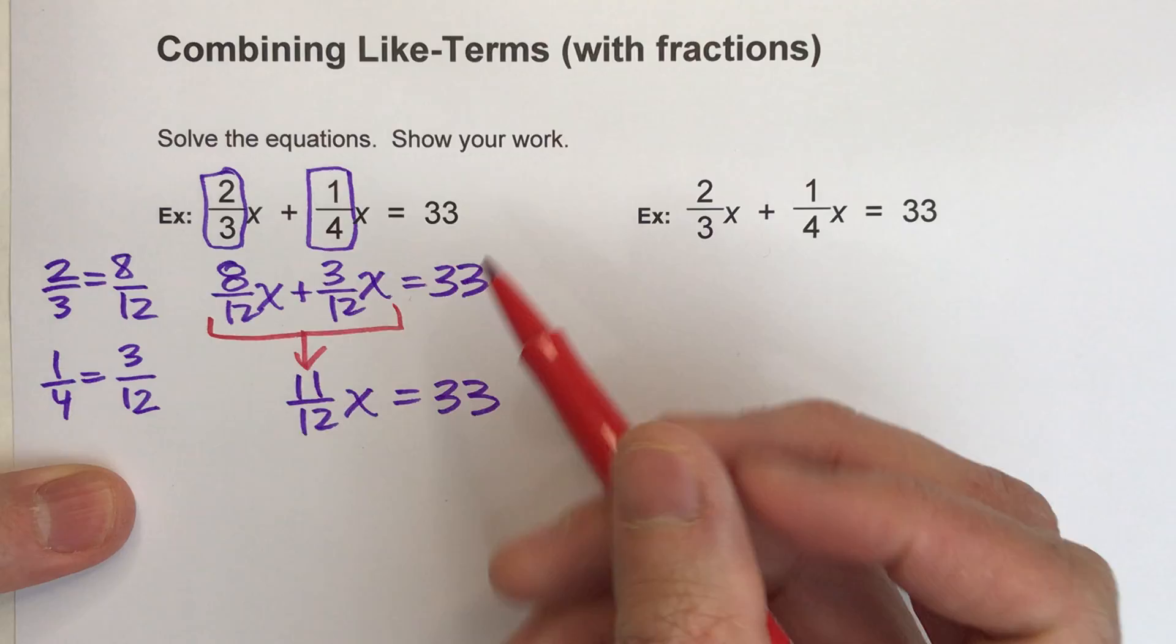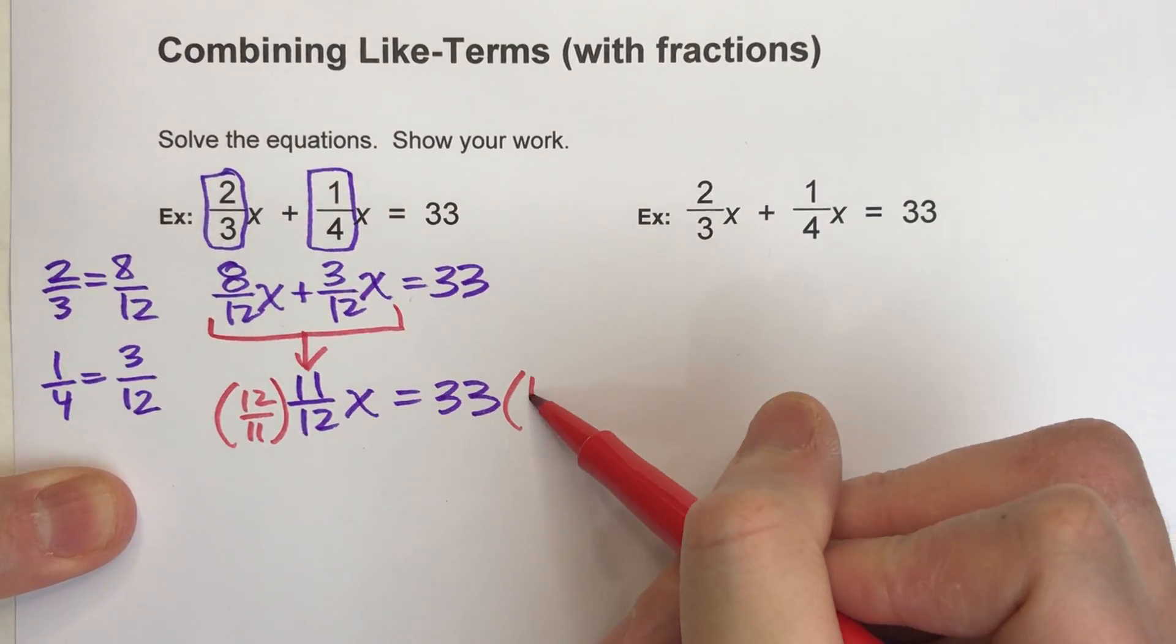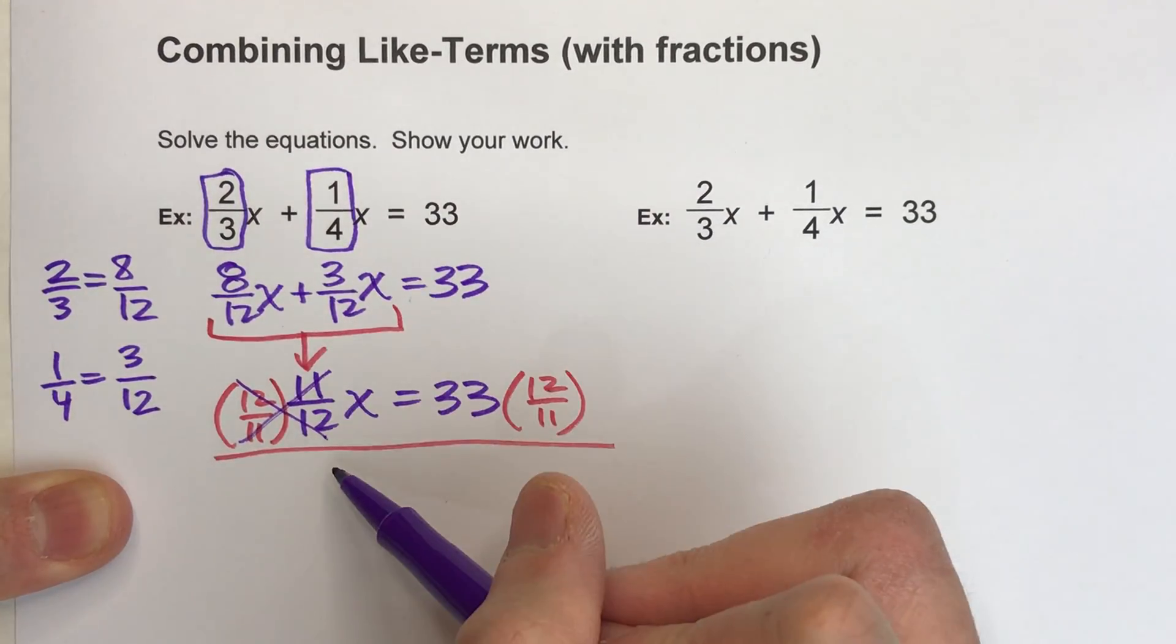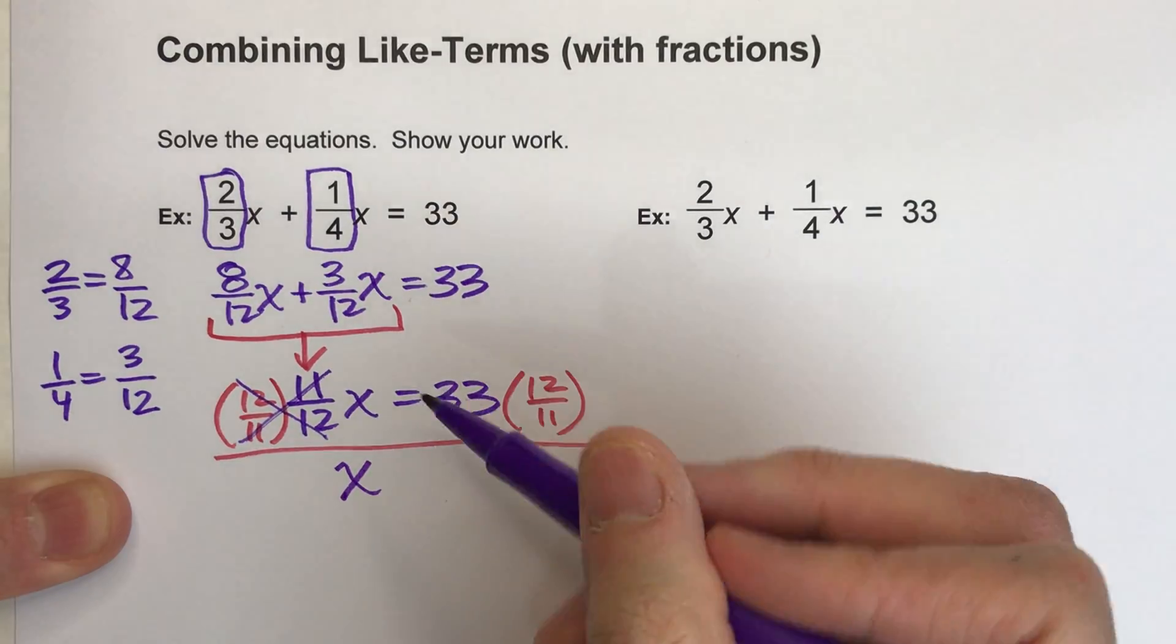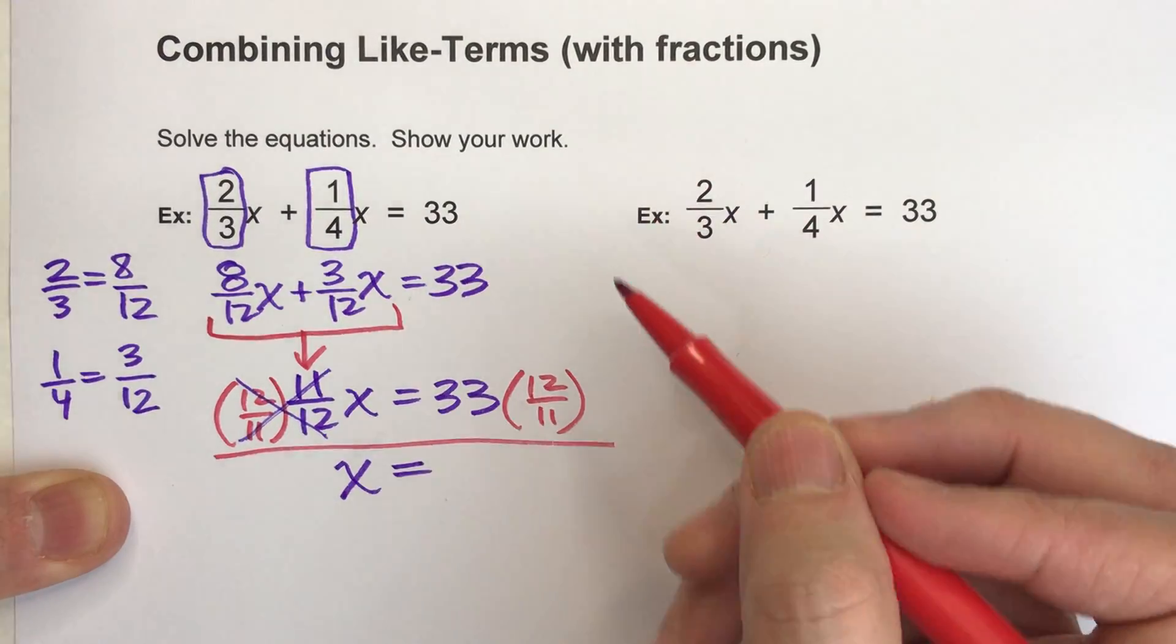To undo a fraction, I can multiply both sides by the reciprocal. And when I do that, 12/11 times 11/12 undo each other and make one whole, so this is one whole x. Equals drops down, and 33 times 12/11.